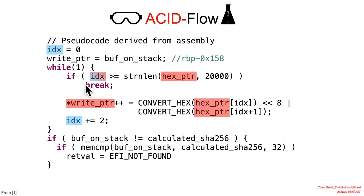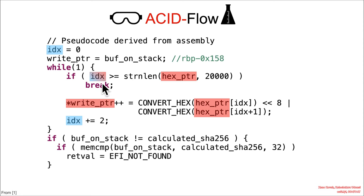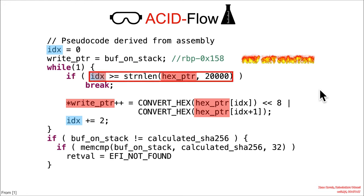It's a while(1) loop, which means the only way out of it is this break condition. Because the hex pointer is fully attacker-controlled and it'll go up to 20,000, that means practically speaking this index is semi-attacker-controlled — they can just keep increasing the value of the string in order to keep increasing the index. So that is a semi-attacker-controlled value, which means this is effectively an asset exit condition.